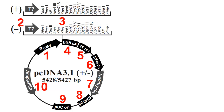You might also have noticed that there's a plus and a minus version of this vector. The only difference is that the plus and minus versions have different restriction enzymes in the multiple cloning sites, just giving you more flexibility when you're doing your cloning.